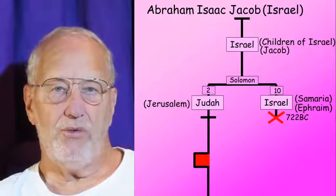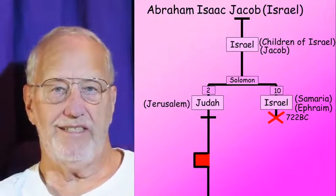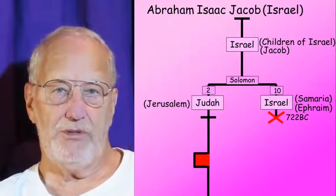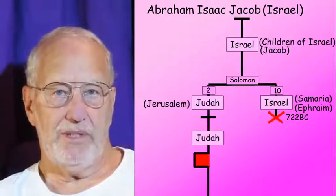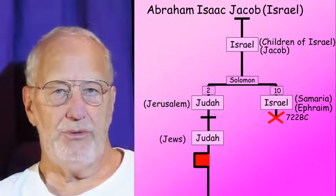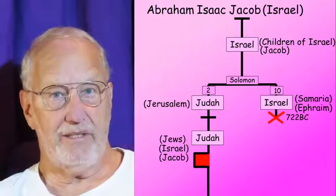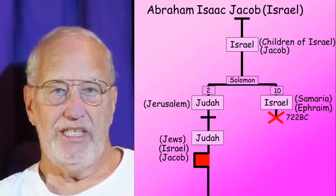In 722 BC the ten northern tribes were defeated and wiped from the map of history and lost their identity. So from then on the whole of the Old Testament story is about the remaining two tribes, Judah and Benjamin. They are generally known as Judah, but they can also be known as the Jews, and confusingly they can now also be known as Israel or Jacob. Isaiah really prefers the word Jacob, but he's only referring to those two southern tribes. So there we are — three periods of history, a lot of names, but it's helpful to know what they mean.